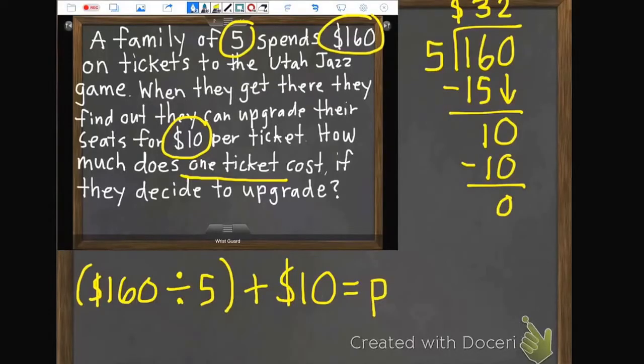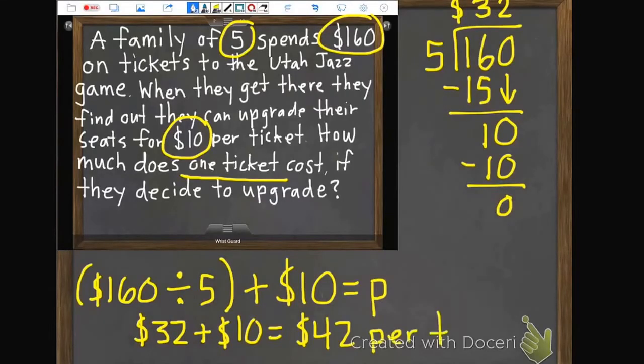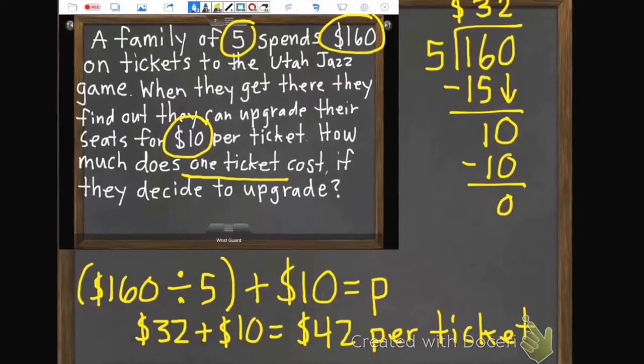So they can upgrade their seats for $10 per ticket. So if we add our 32 down there, plus our 10, that's going to equal $42. So it would cost $42 per ticket, for one ticket, if they decided to upgrade. So there we go. $42 per ticket.